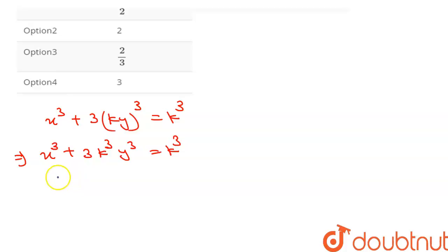Now we have to differentiate both sides. We can get basically d by dx of x raised to power n equal to n x raised to power n minus 1.